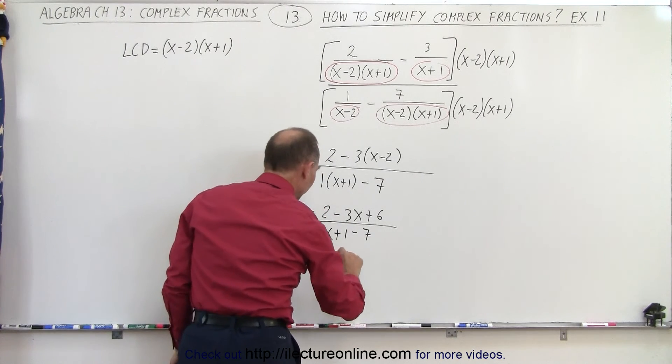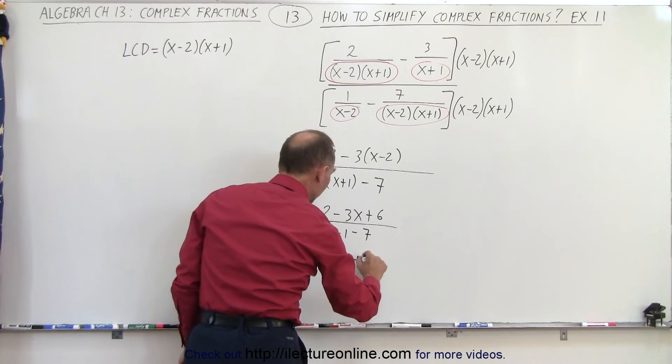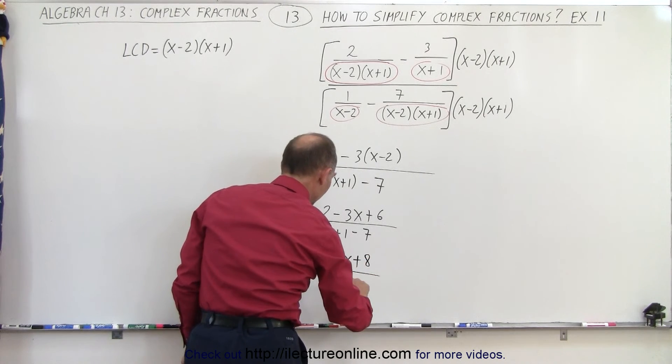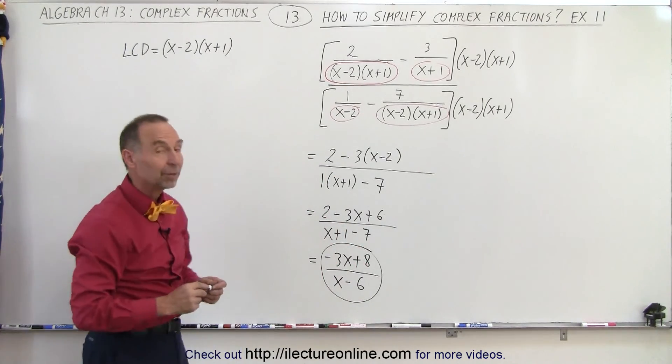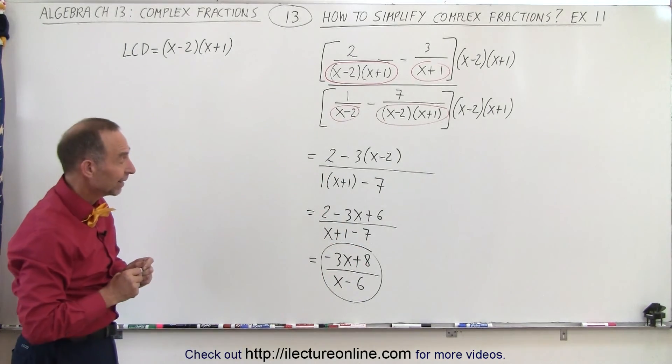Collecting common terms, we get minus 3x plus 8 divided by x minus 6. And that's the final form of our complex fraction. And that is how it's done.